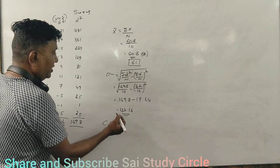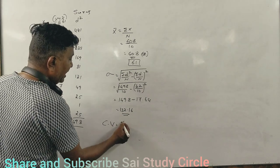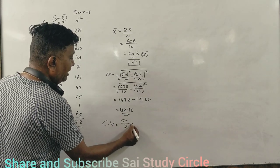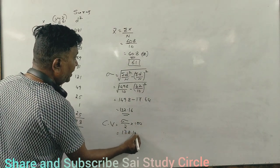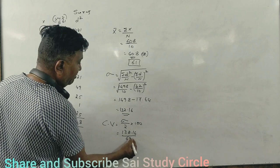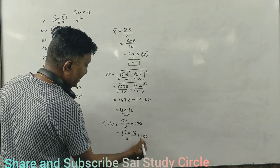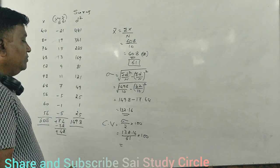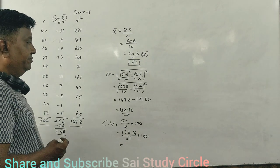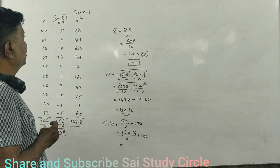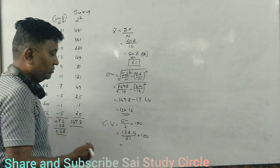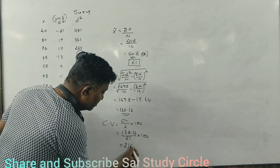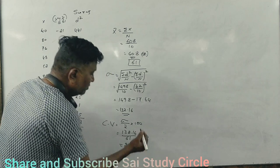Coefficient of variation: standard deviation divided by mean into 100. Standard deviation is 132.16 divided by 61 into 100. Let's calculate.